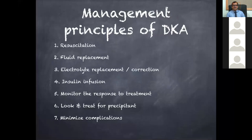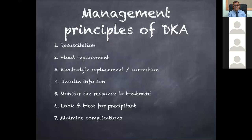Now the practical management. We have a 33-year-old young female significantly dehydrated, in compensated shock, and significantly dyspneic. There are seven management principles: first, resuscitate the patient; then fluid replacement, electrolyte correction, insulin infusion, monitoring response to treatment, identifying and treating precipitants, and minimizing complications of DKA and its treatment.